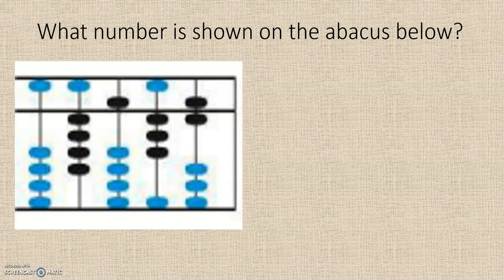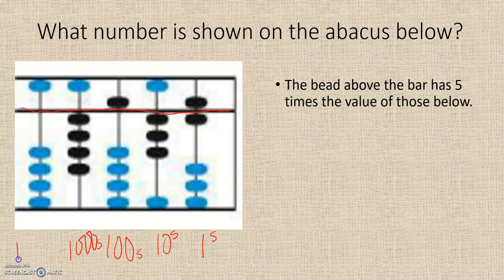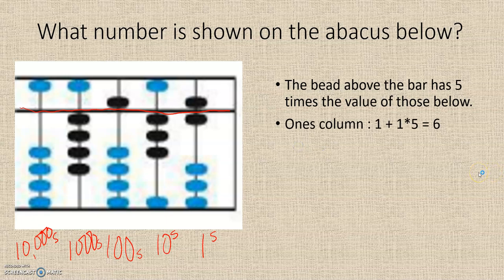We have the question: what number is shown on the abacus below? The beads above this horizontal line have 5 times the value of those below. This is the ones column, the tens column, the hundreds, the thousands, and the ten thousands. Looking at the ones column, we have one bead below the line and one above, so that one plus one times five gives us six for the ones column.